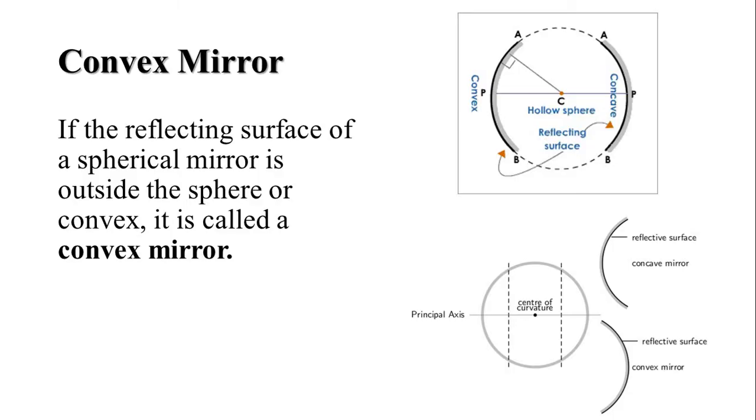Let us understand about the convex mirror. As we discussed in the previous video, there are two types of spherical mirrors: concave mirror and convex mirror. If the reflecting surface of the mirror is present inside the sphere, it is called concave mirror. And if the reflecting surface of the mirror is outside or bulged or convex, then it is called convex mirror.